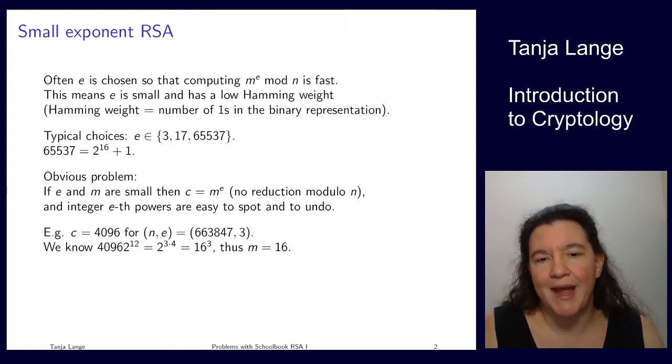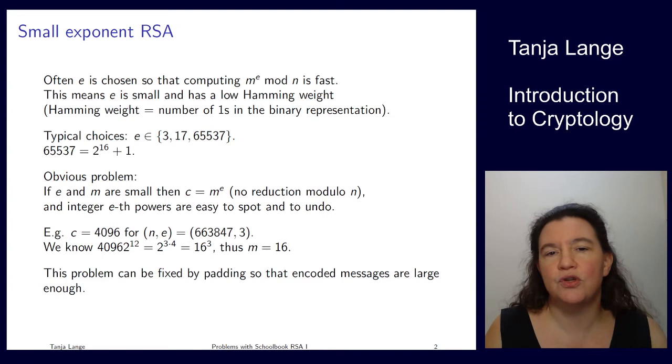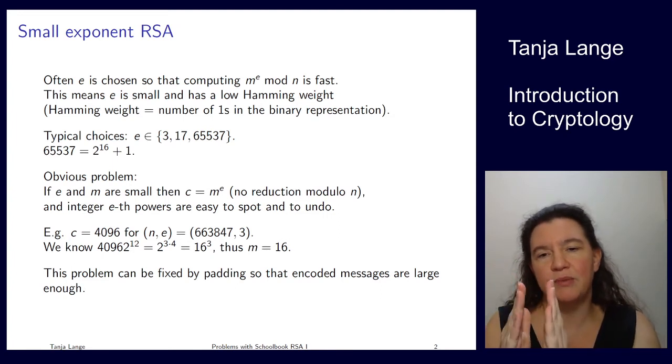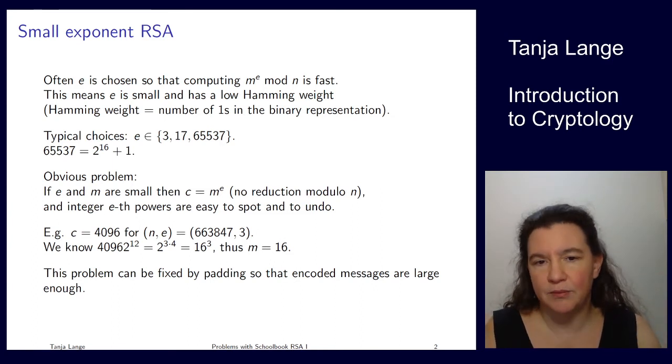So how can we deal with this? There is an obvious solution. You have seen padding in case of block ciphers and in case of hash functions and MACs. And so also here the solution is to have some padding. Now in this case, the padding should ensure that the message gets large enough. So you want to ensure that your message is somewhere in the high bits, so that you have some high bits set, so that reduction modulo n does appear.